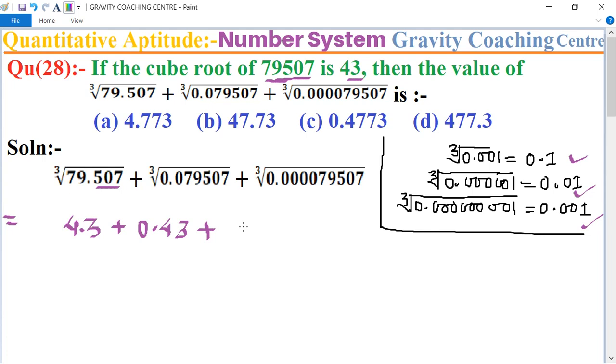Plus the last one: 43 becomes 0.043. So the total sum is...